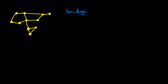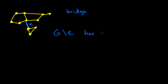One property we're looking at is: if we take a look at a particular edge and imagine the graph without that edge — so if this is edge E and we think about the graph without edge E — we can see that it used to have one connected component, and after we remove edge E, it will be disconnected. It will have two connected components.